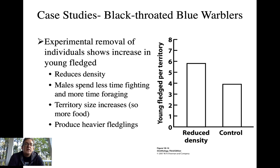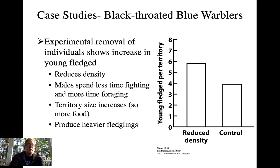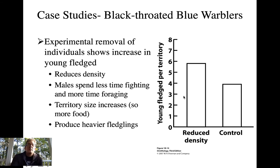They did an experimental study to reduce density in black-throated blue warblers by removing individuals from the breeding habitat. The response was that males spent less time fighting and more time foraging, putting themselves in better shape with higher survivorship. They were also better parents, bringing more food to their young, producing heavier fledglings, and their territory size increased. It was a win-win situation — by lowering the density you effectively made it easier for these birds to have higher reproductive success and survivorship. Young fledged per territory in the reduced density treatment was much higher than in controls.